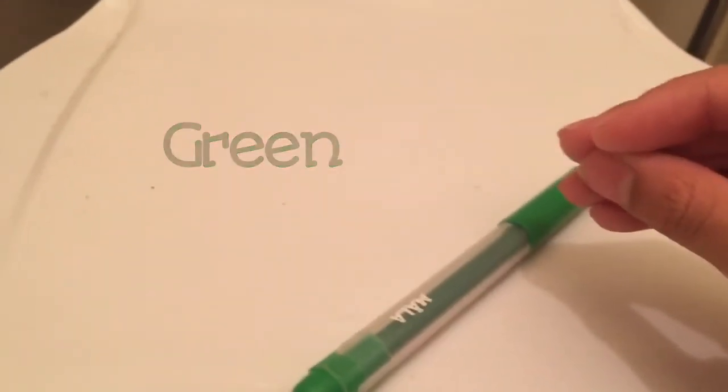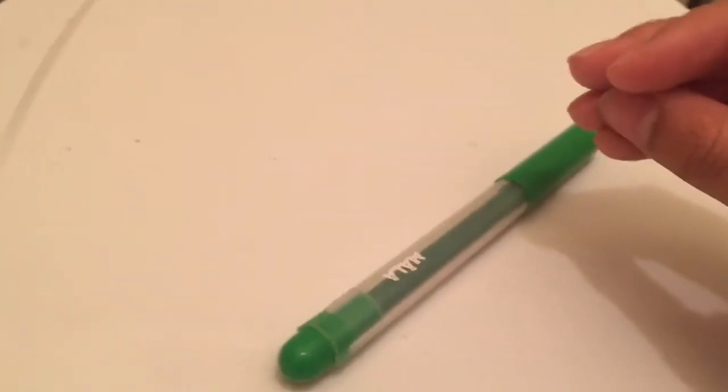The next color we have here is green. Green is the color of beautiful plants, it could be the color of your eyes, and it could also be the color of green apples.